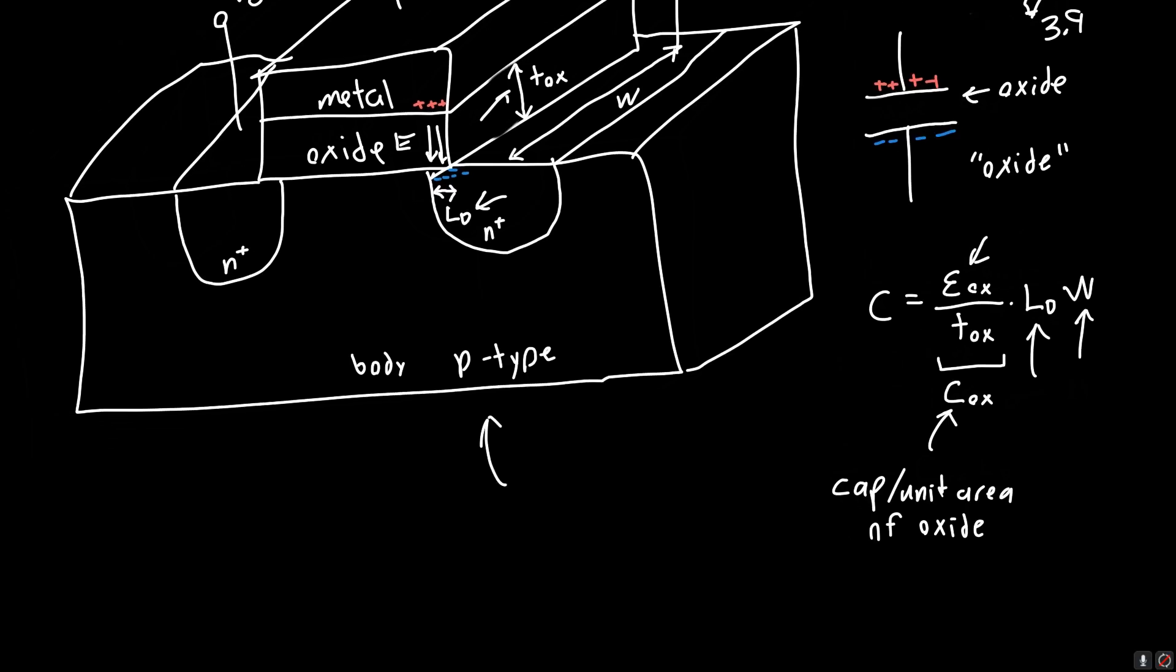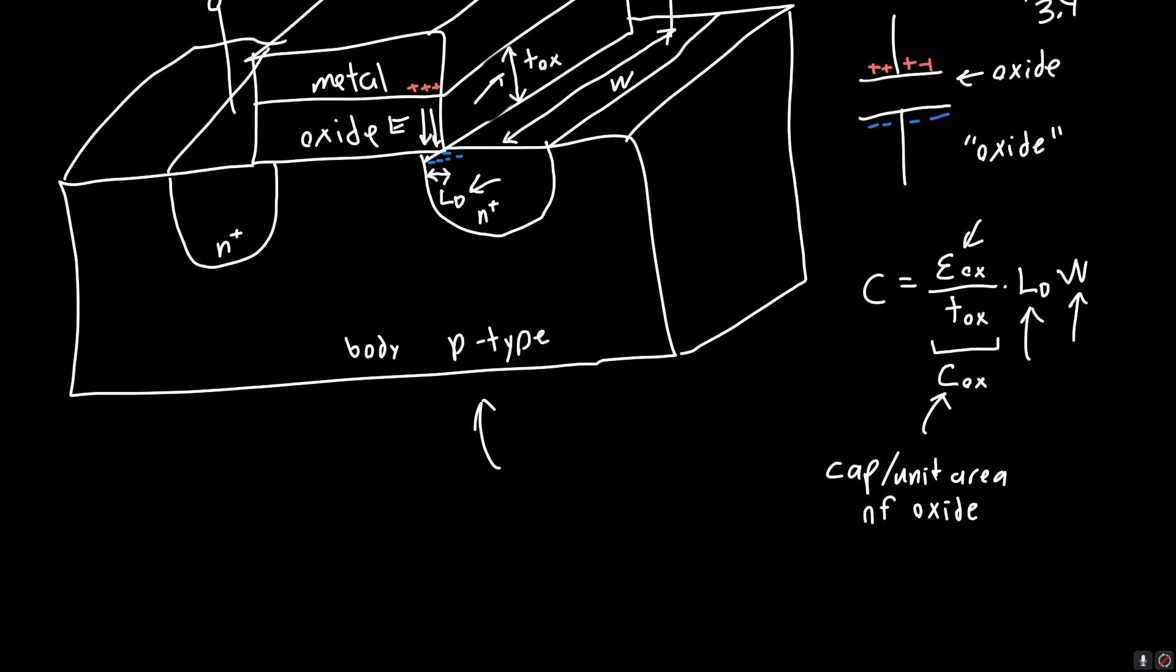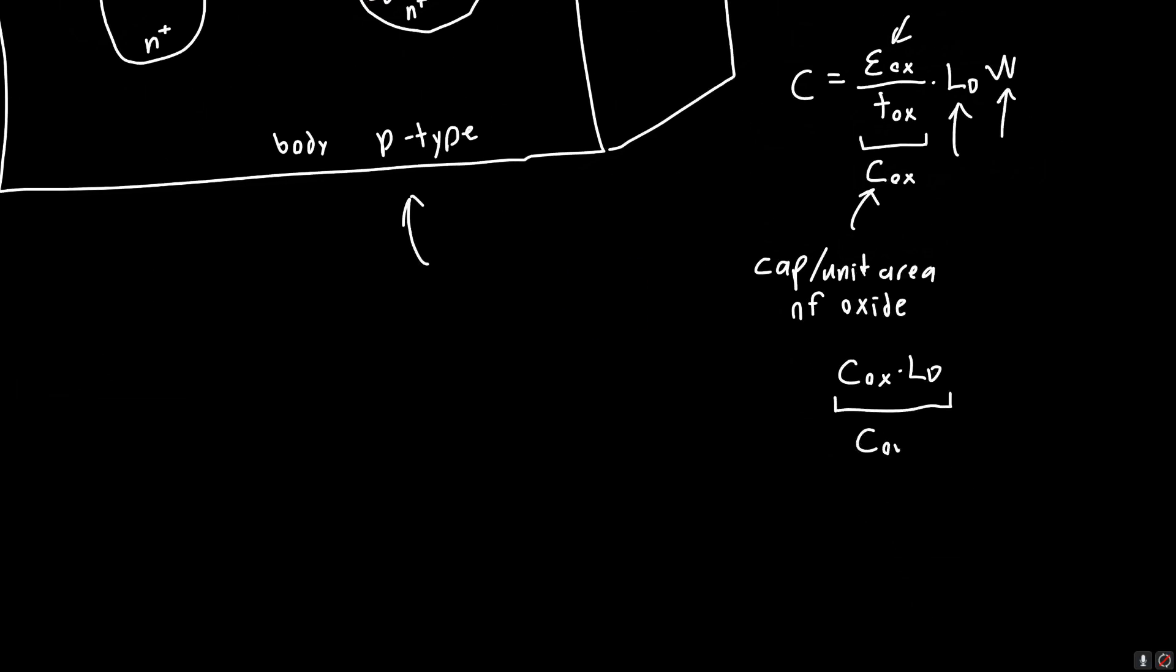So even more commonly, you'll see this COX times LD grouped into a single term that we call COV, or C Overlap. And it's kind of awkward, because it's got units of farads per meter, or more typically femtofarads per micrometer. And you might be like, well, what is this capacitance per micron? Well, it's just saying that we don't control this overlap LD.